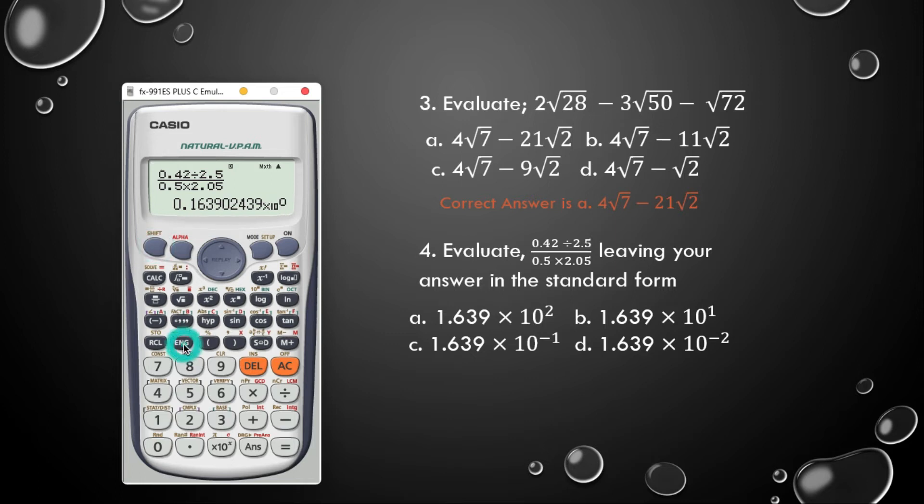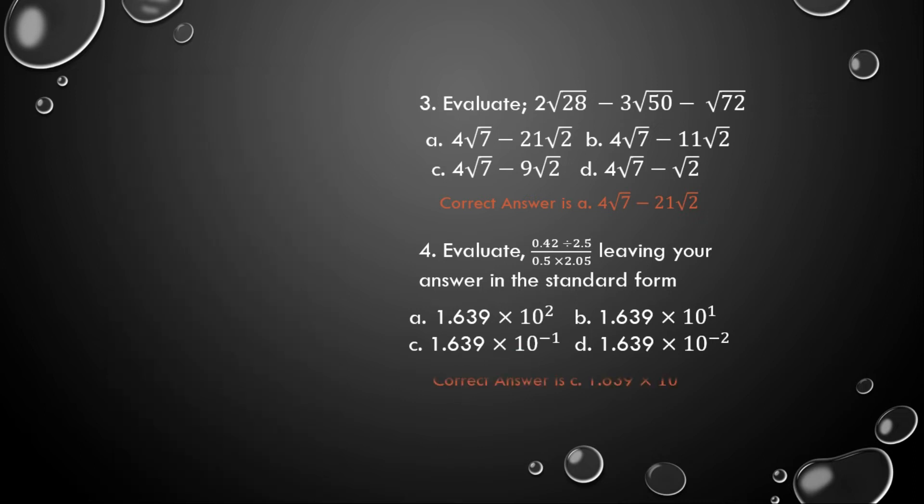But the thing is in the scientific form, so I press shift then ENG, so it is being expressed in the scientific form. Now it's saying that we should leave the result in the standard form, and in all the answers we get one point something. Now I move my decimal point once in front of the one. So when I move to the right I get negative exponent, and when I move to the left I get positive exponent. Look at where the decimal point is, in front of the one. So when I move it once, I get 1.639, so I've moved once to the right therefore have negative one exponent. It was a negative exponent one, so that means that our result would be C. C is the answer.